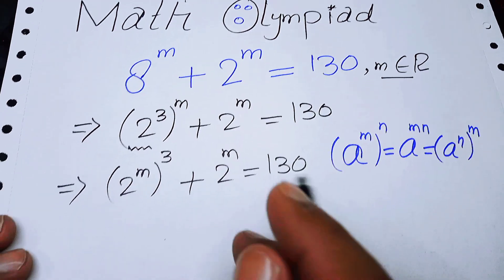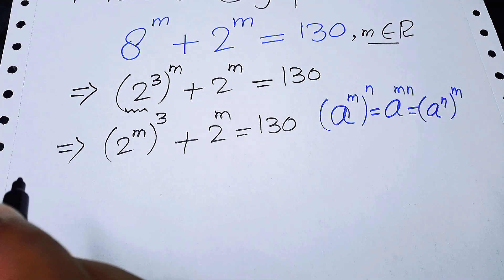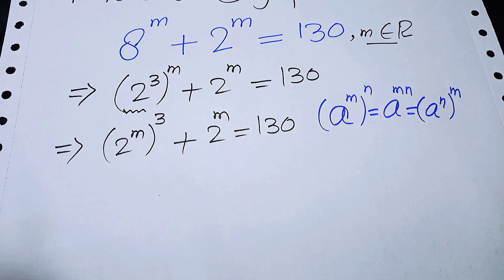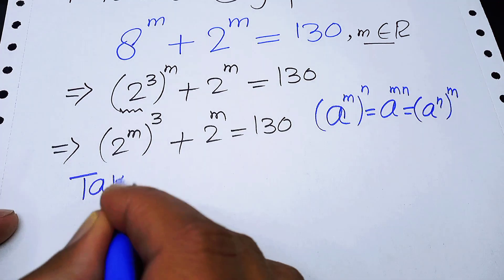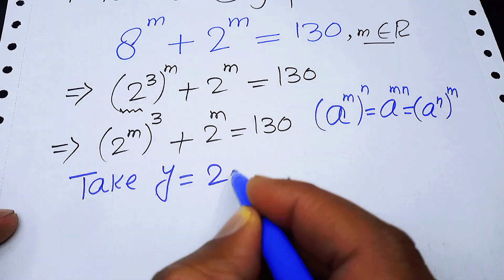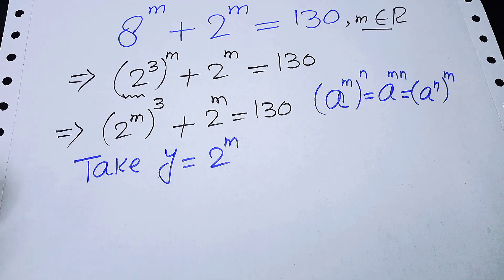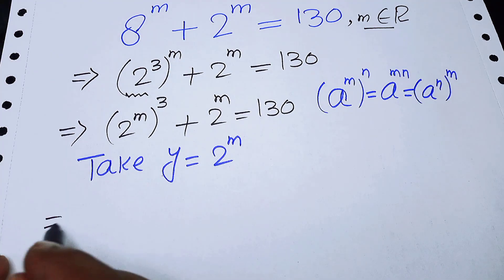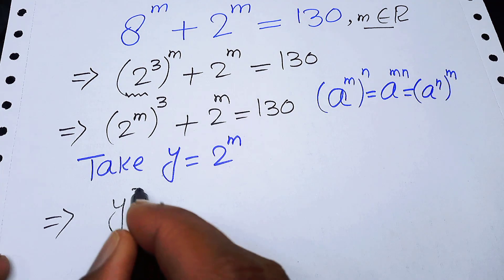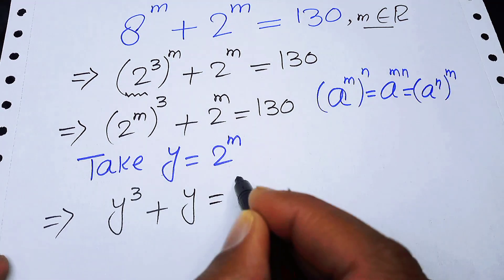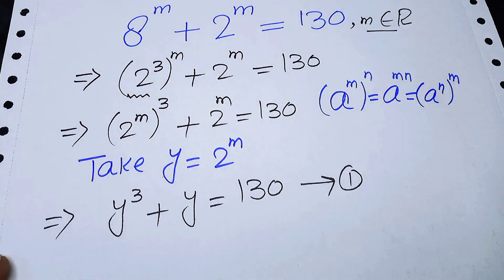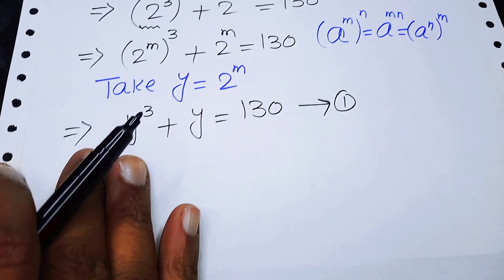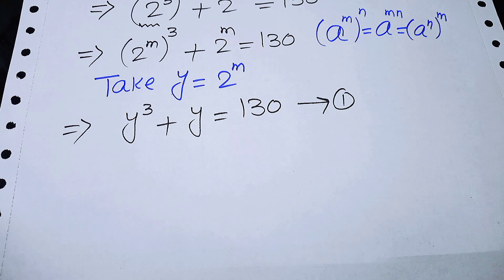We can rewrite this in simplified form by letting y equal 2 to the power of m. This gives us y cubed plus y is equal to 130. We take this as equation number one.